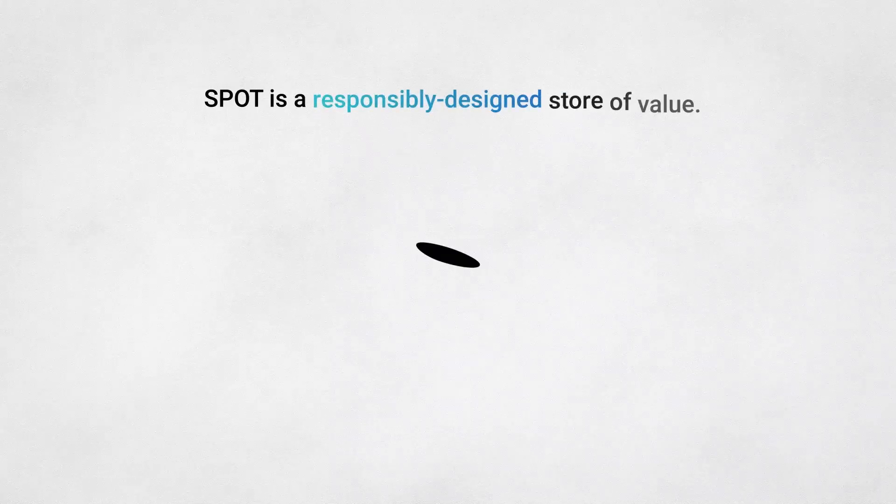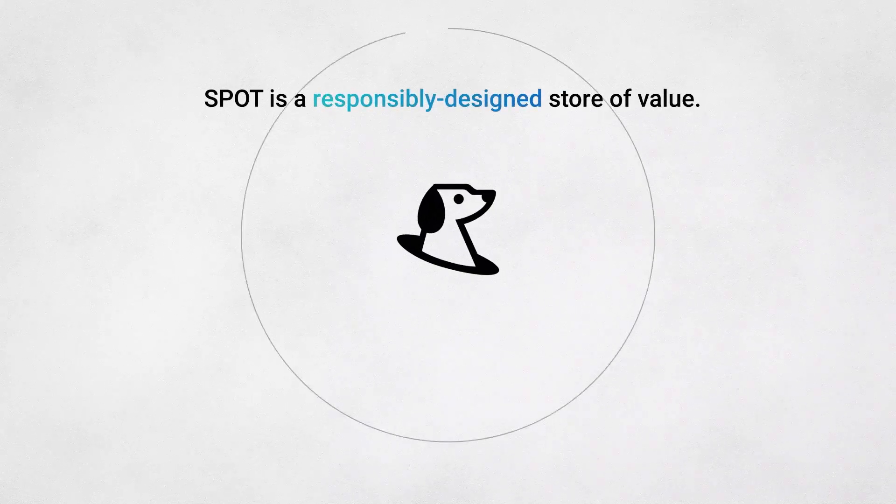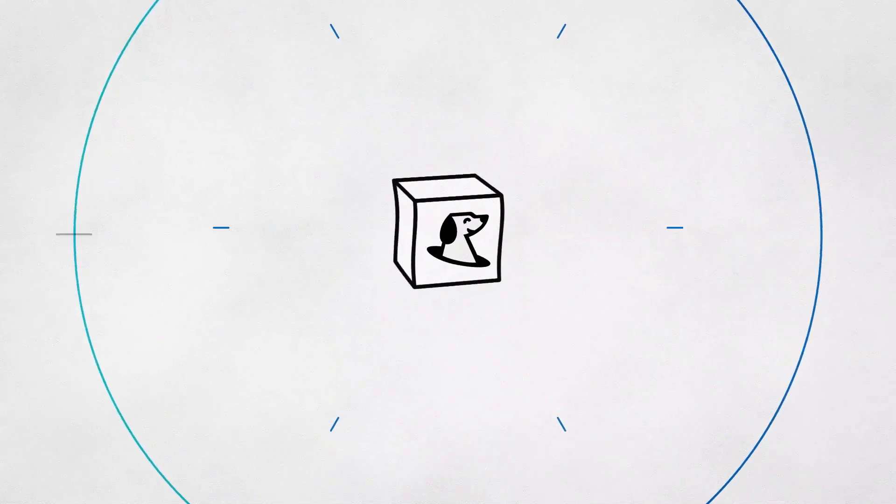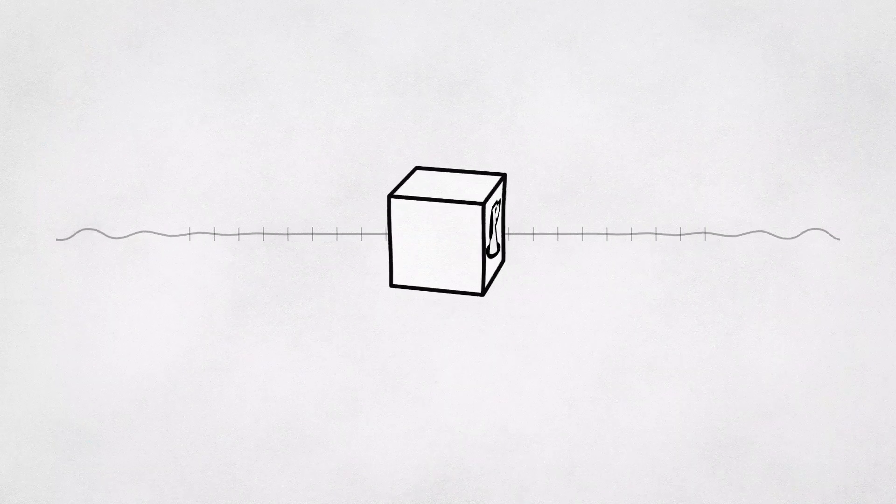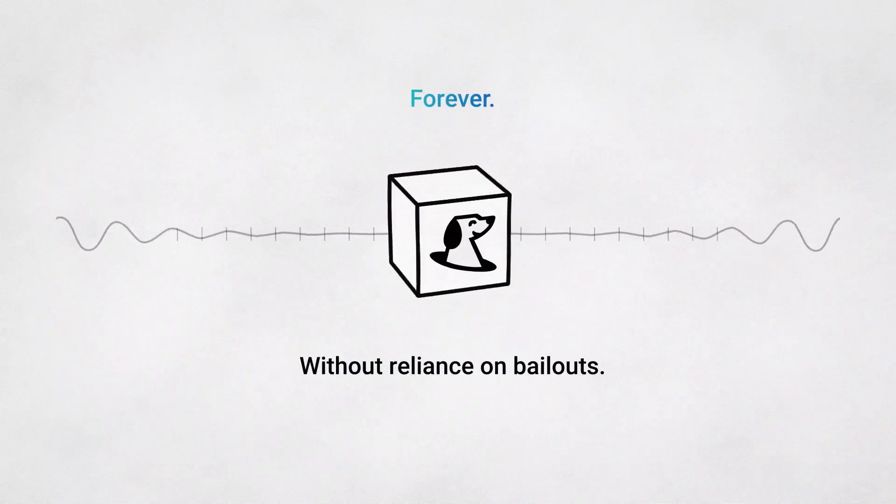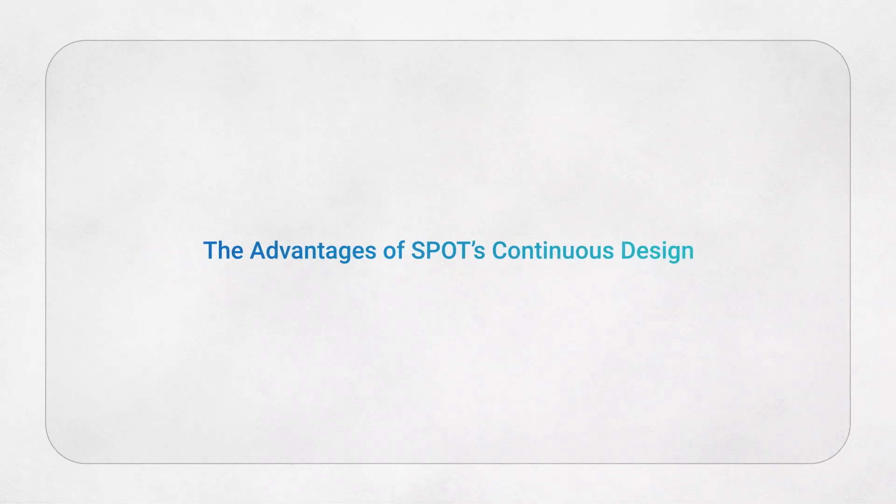Spot is a responsibly designed store of value, built to support extremely long-lived periods of stability. The system bends safely rather than breaking catastrophically and can forever resume its function without reliance on bailouts. In this video, we'll cover the advantages of Spot's continuous design.